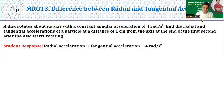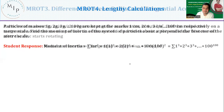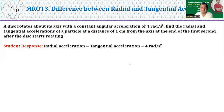Let us begin. The topic here is the difference between radial and tangential acceleration — one of the biggest problems everyone faces in rotation. A disc rotates about its axis with a constant angular acceleration of four radians per second squared.